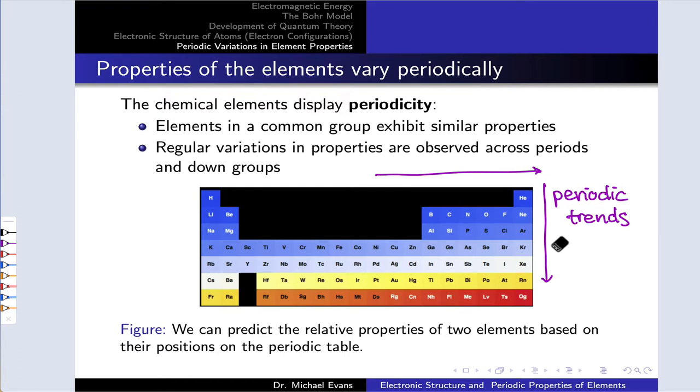For example, we can take knowledge of oxygen and apply it to sulfur using periodic trends to understand the ways in which sulfur will differ systematically from oxygen. The same is true for other pairs of elements in a common group or period. We'll look at a number of periodic trends here in various properties, trying to understand the origin of periodic trends in addition to being able to apply them.